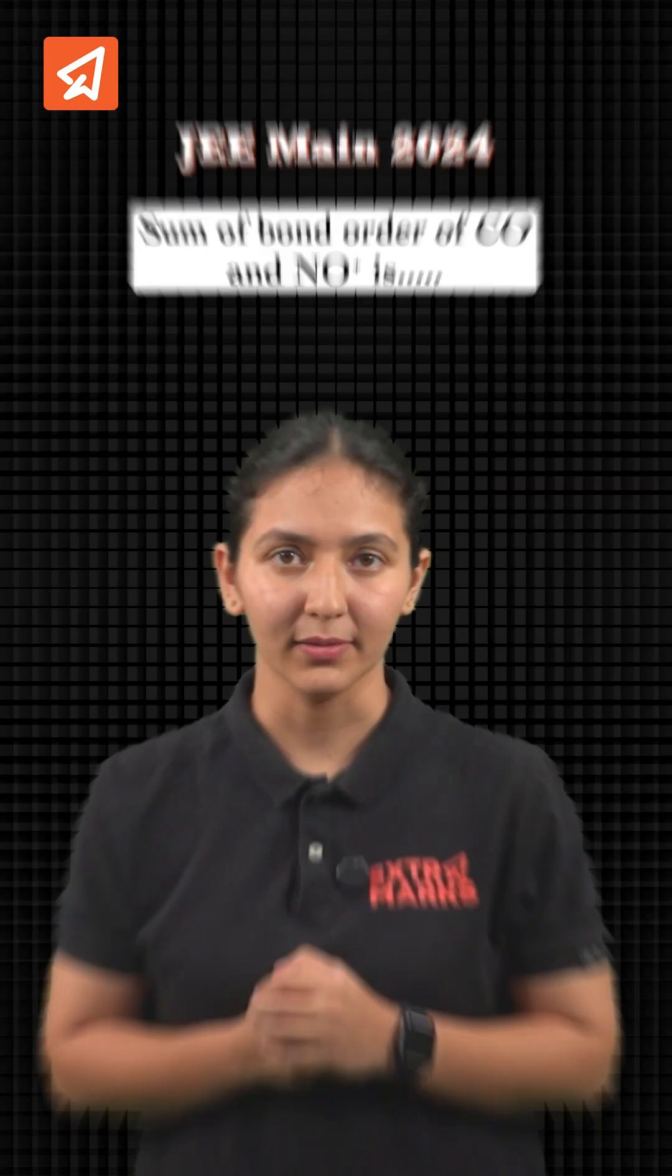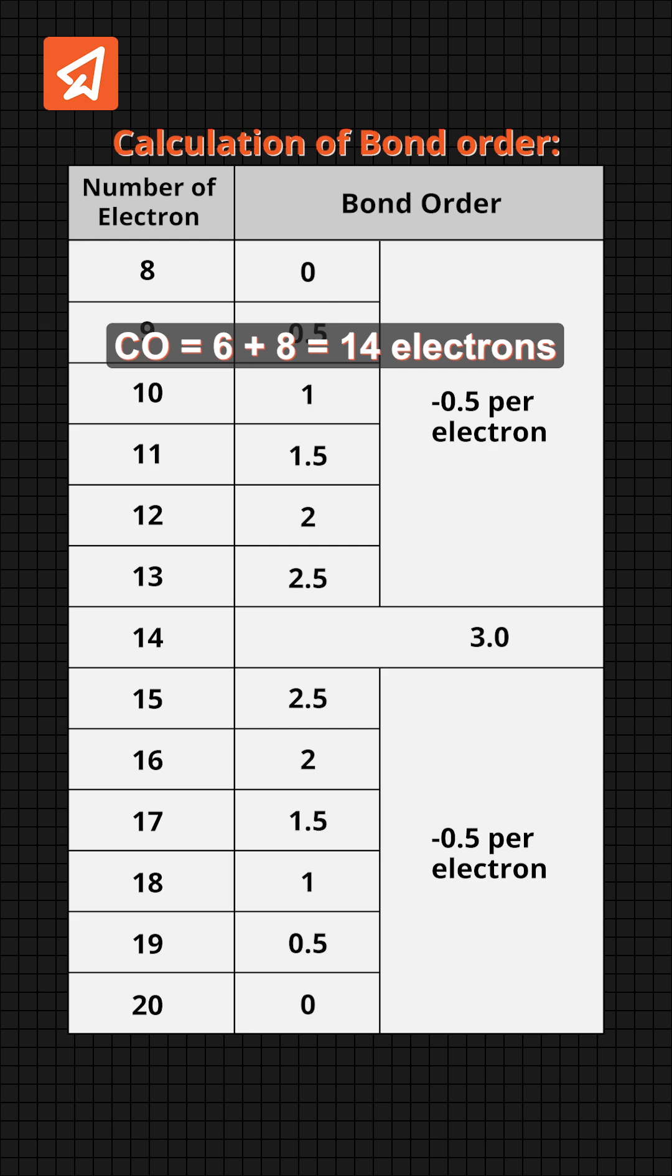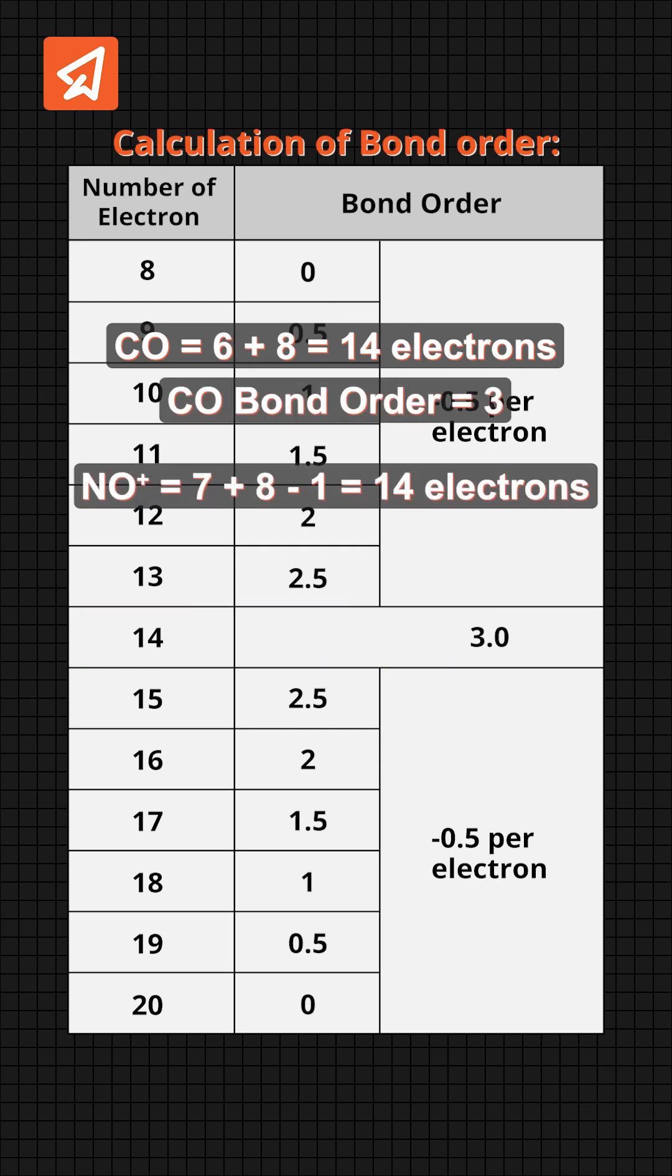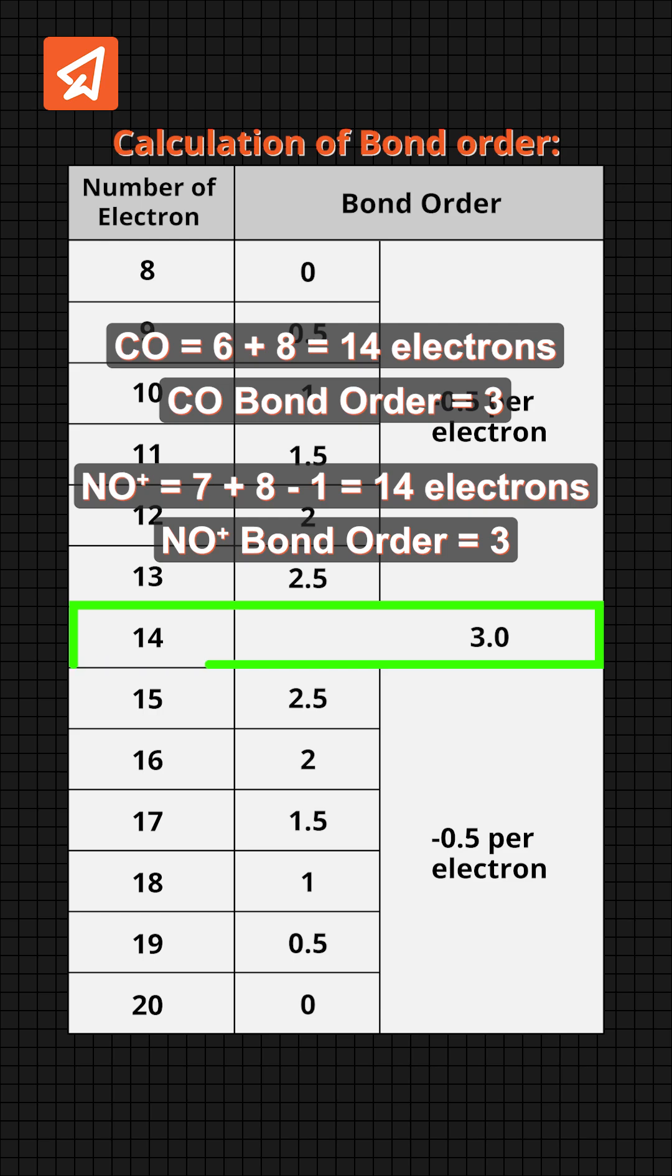Now let's solve the same question again. CO has electron count 14, hence the bond order is 3. NO plus has electron count 14, hence the bond order is 3. Hence the sum of bond order of CO and NO plus is 6.